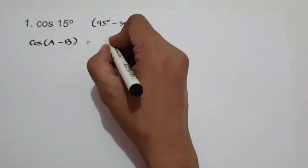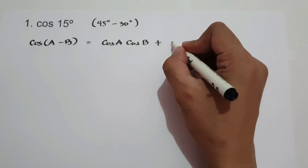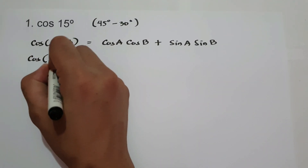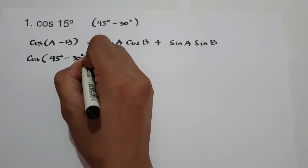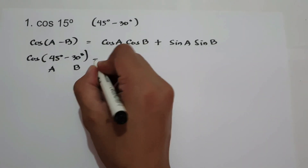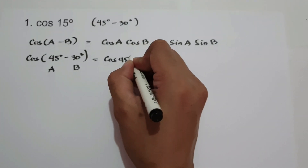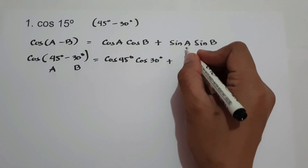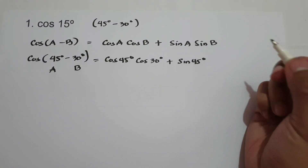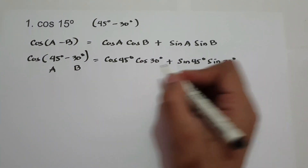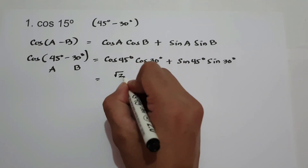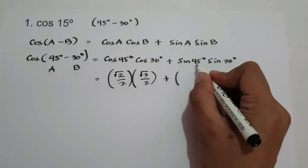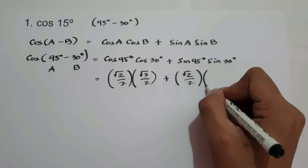Cosine(A-B) = cosine A times cosine B plus sine A times sine B. So let us simplify with A = 45 degrees and B = 30 degrees. Cosine 45 degrees times cosine 30 degrees plus sine 45 degrees times sine 30 degrees. Cosine 45 degrees is √2/2, cosine 30 degrees is √3/2, sine 45 degrees is √2/2, and sine 30 degrees is 1/2.